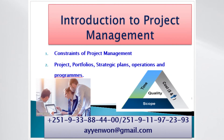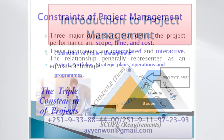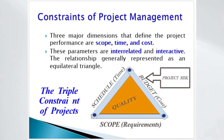Hello everyone. Welcome to this lecture. First, let us see the major constraints of project management. Three major dimensions that define the project performance are scope, time, and cost. These parameters are interrelated and interactive.